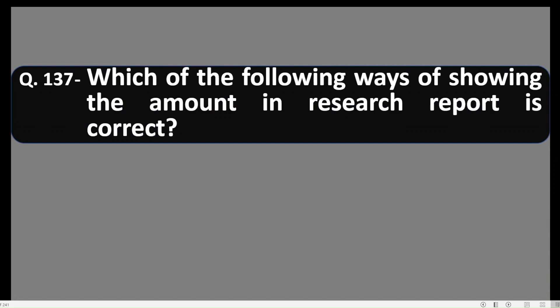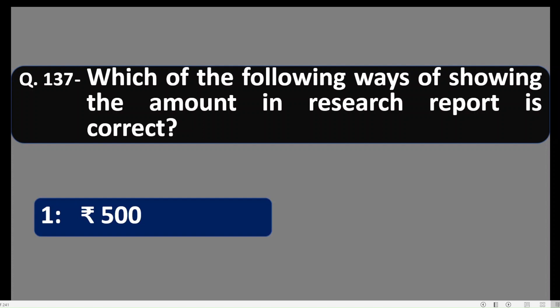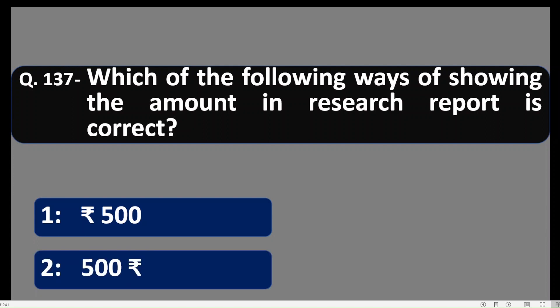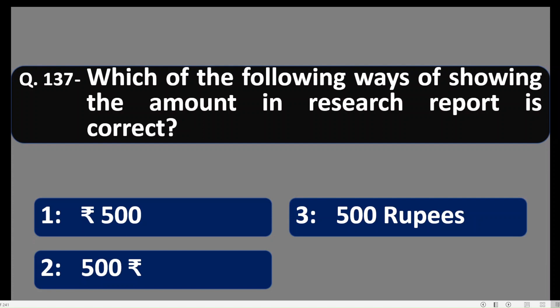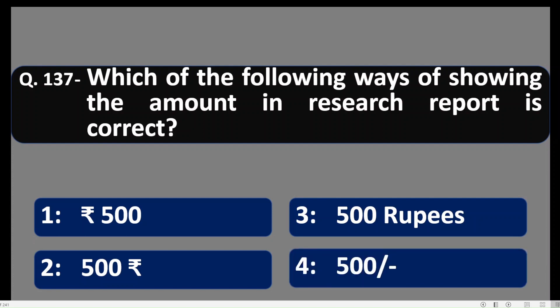Question 137: Which of the following ways of showing an amount in a research report is correct? The correct way is option number 3: writing the amount as '500 rupees' in words — whether it is rupees, dollars, or pounds, the amount should be written out in full in the research report.